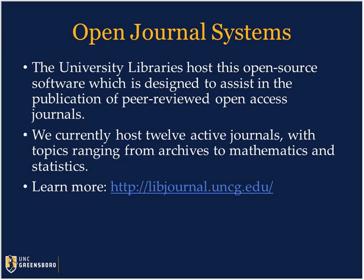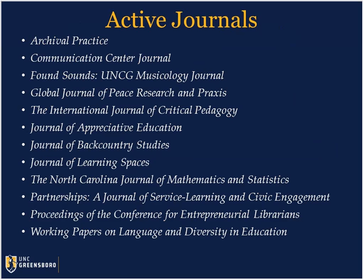Another service that we offer is Open Journal Systems, or OJS. This is open source software designed to assist in the publication of peer-reviewed open access journals. We currently host 12 active journals covering a wide variety of topics — from archives to communications, communication centers, musicology, learning spaces, math and statistics, and many others. Some of these journals focus on student scholarship coming out of UNCG, while others focus on different scholarly areas and have contributors from across the country and around the world. There is always at least one UNCG person involved on the board of each journal.